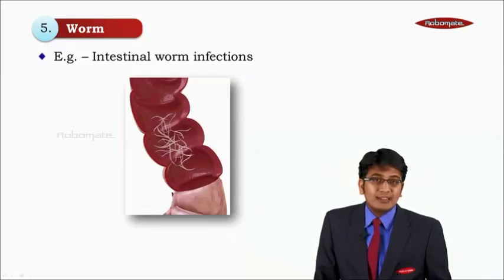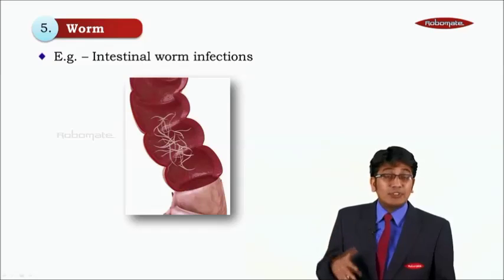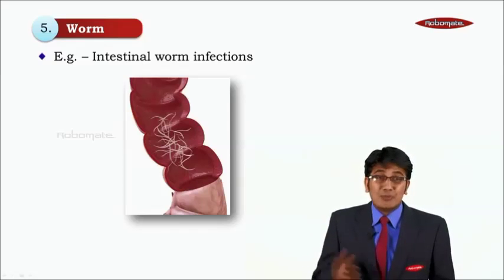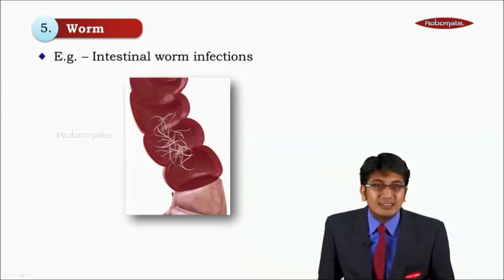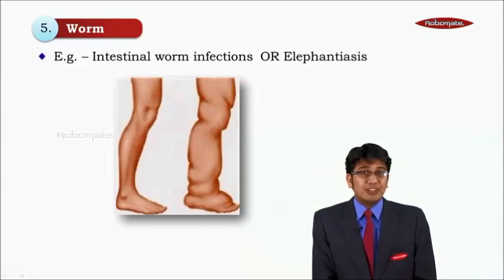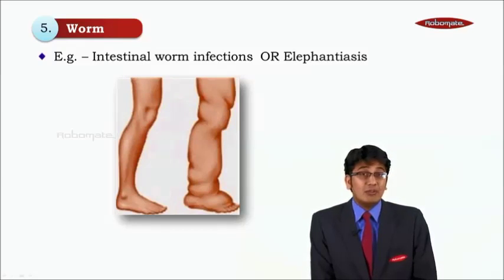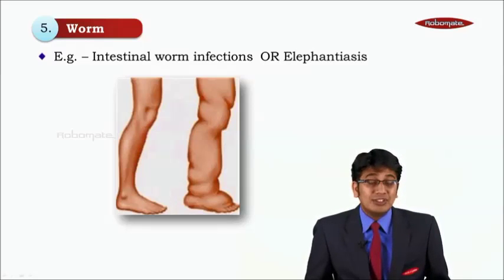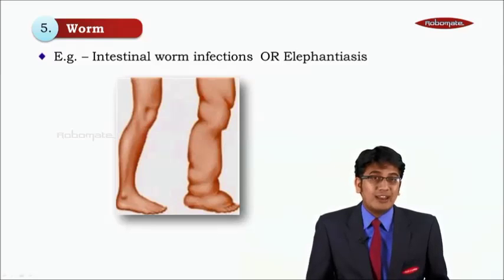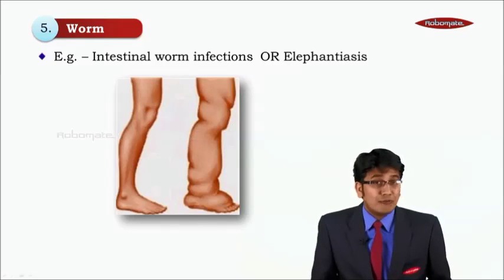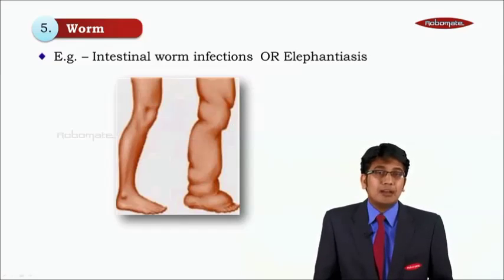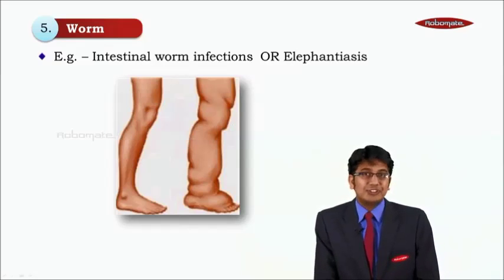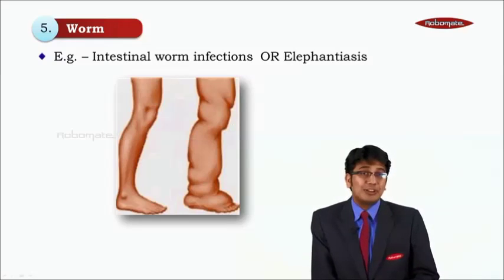Worms are another category of infectious agents. Ascaris is a very dangerous intestinal worm — white worms that live inside your intestine, eating and hurting you. Elephantiasis is caused by the filarial worm, which enters your skin, and the part it enters becomes enlarged like an elephant's limb — hence it is called elephantiasis, very common in some parts of Kerala. So these are the infectious agents which can cause disease.